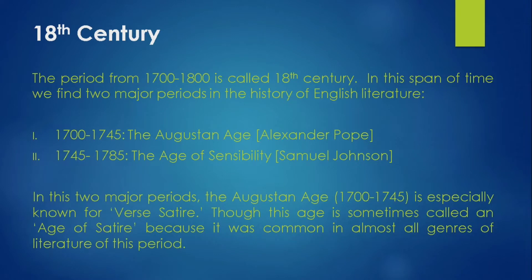First, let us learn about the 18th century. The period from 1700 to 1800 is called the 18th century. In this span of time, we find two major periods in the history of English literature: the Augustan Age and the Age of Sensibility.